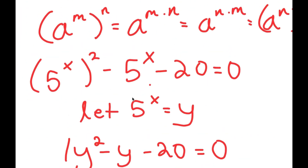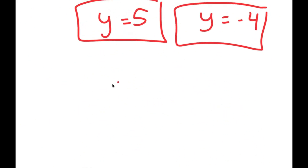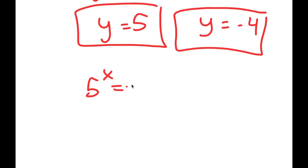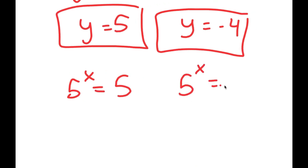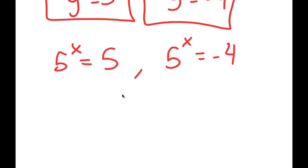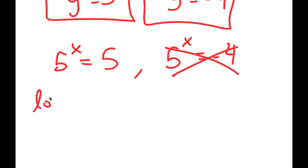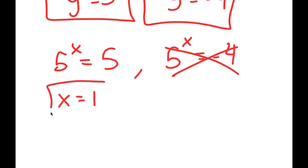Remember we let 5 to the power of x equal y, so this gives two equations: 5 to the power of x equals 5, and 5 to the power of x equals negative 4. We can't raise a positive number to any power and get a negative result, so 5 to the power of x equals negative 4 has no solution. For 5 to the power of x equals 5, we can see that 5 to the power of 1 equals 5, since anything to the power of 1 is itself. So x equals 1 is my solution.